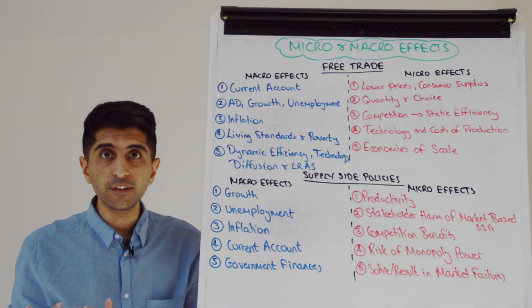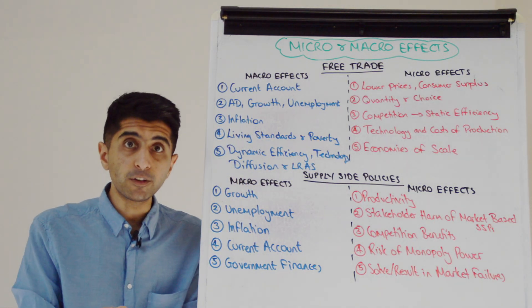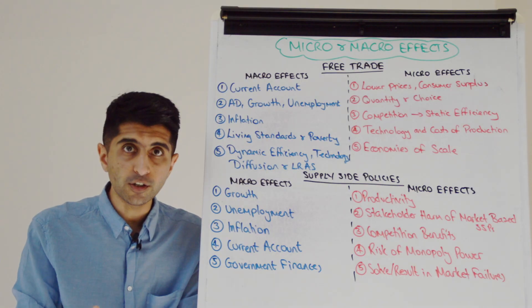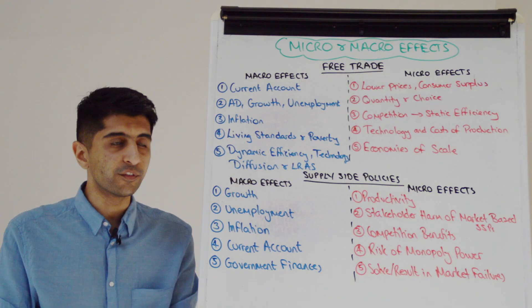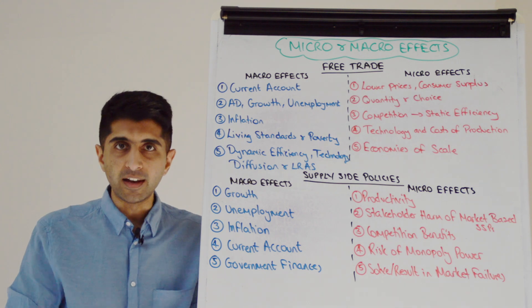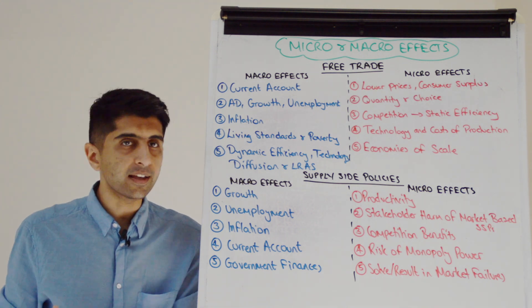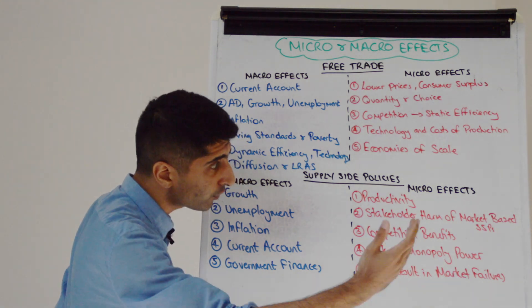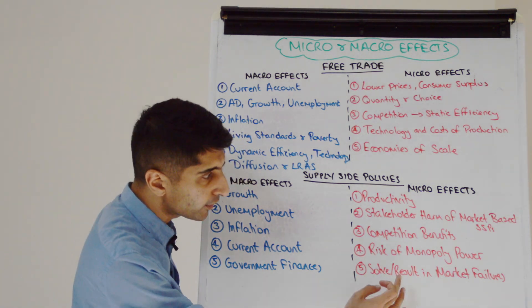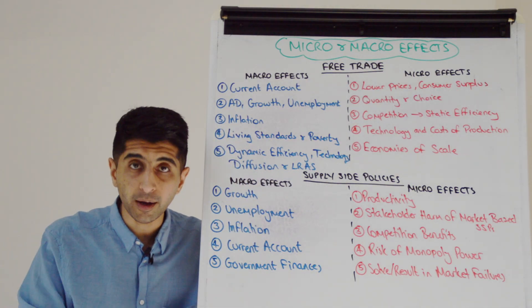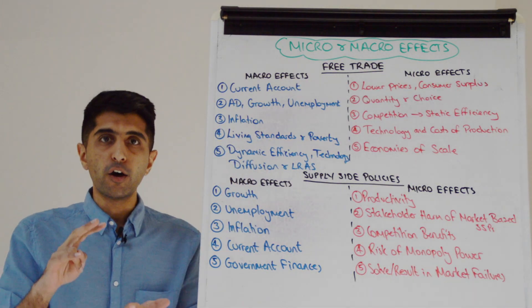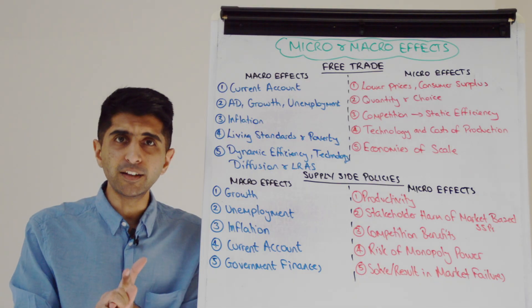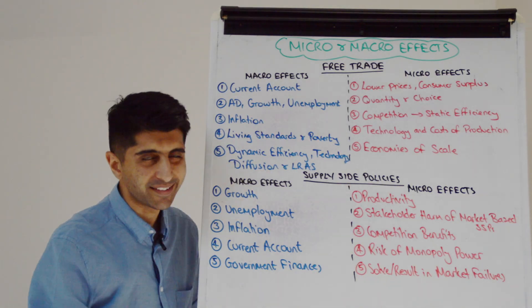But also certain supply side policies can solve market failures — government spending on education and training, government spending on healthcare, government spending on infrastructure can solve key public good market failures, key positive externality market failures. But also certain supply side policies can result in market failures. We've talked about deregulation, we've talked about risk of monopoly power of privatization and of deregulation. So we can go both ways — clearly micro effects.